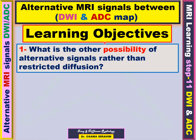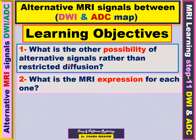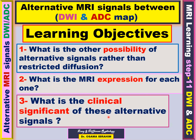The learning objective from my presentation today is talking about the other possibilities of alternative signals between diffusion-weighted image and ADC map rather than restricted diffusion, and also what are the MRI expressions for each one and what is the clinical significance from these alternative signals.